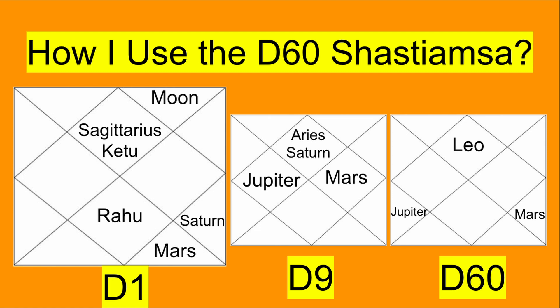In the D60 chart, this is a Leo ascendant and Mars is placed in its own sign of Aries in the ninth house — extremely auspicious to be in its own sign and in the ninth house, which is also a very fortunate house. Jupiter is in its own sign of Sagittarius in the fifth house, another fortunate house, and Jupiter is giving an aspect to Mars. So we can conclude that Mars is actually strong for this individual. It may bring challenges because it is in a difficult position in the D1, but ultimately how Mars matures is very positive, and the final result is very strong.